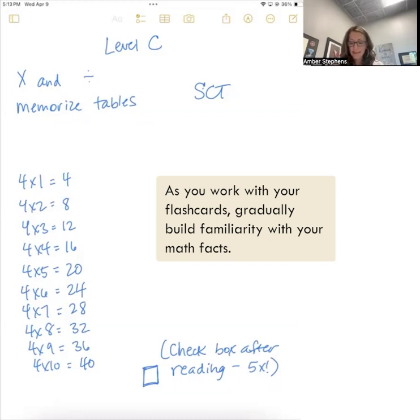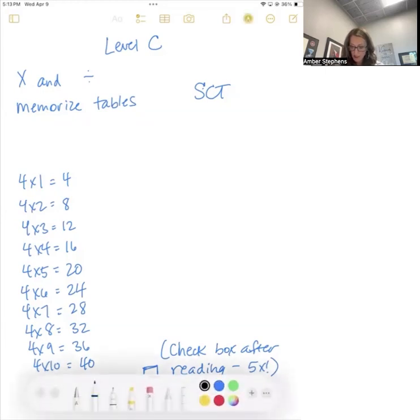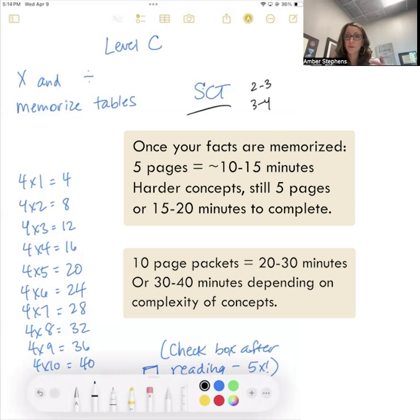The SCT, the standard completion time on Level C, is about two to three to three to four minutes per page. So if you do five pages, then you're looking at 10 to 15 minutes is the goal. Eventually, once you practice and get it memorized, on the harder packets it's about three to four minutes per page, which if you're doing five pages would be 15 to 20 minutes. If you're doing 10 page packets, it would be 20 to 30 minutes for all 10 pages or 30 to 40, depending on the packet. If you have questions on the specific packet, you can always ask or check out the charts in the classroom.